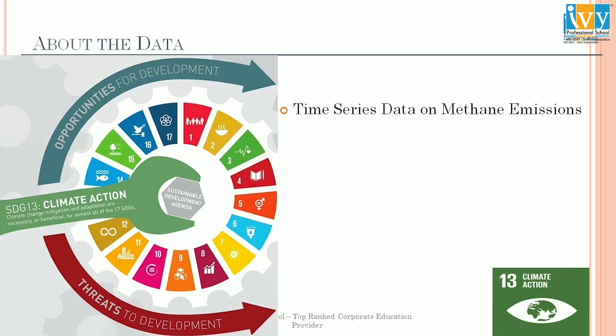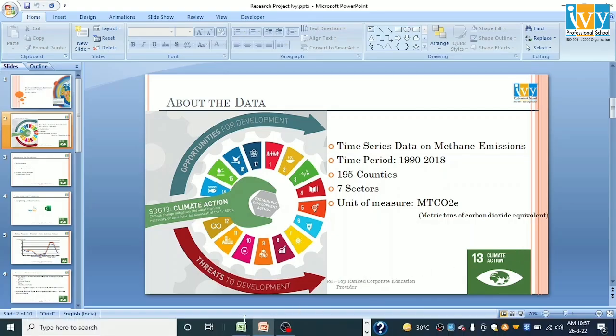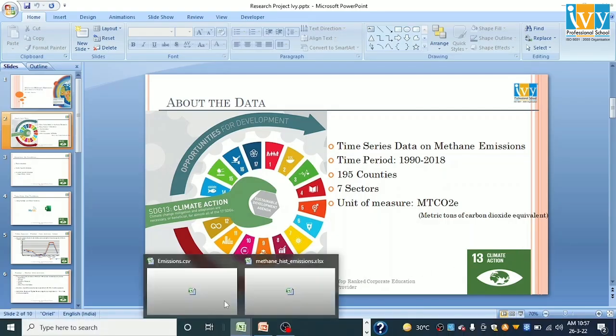First, about the data — this is a time series data on methane emissions. We call data 'time series data' when a collection of observations for a single subject — here it is methane emissions — at different time intervals is collected. The time period covered is 1990 to 2018.